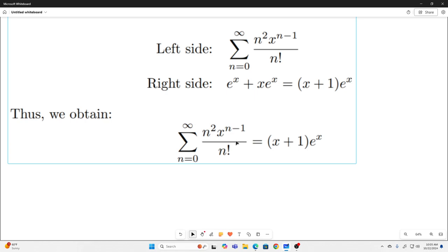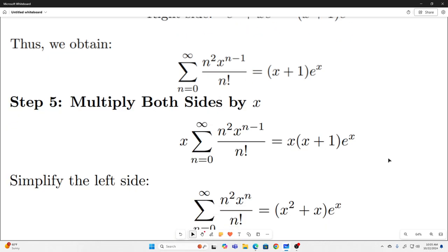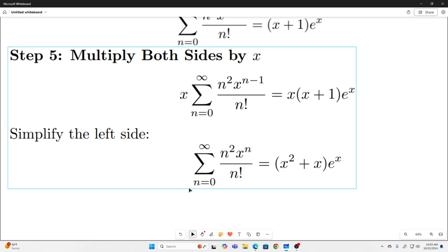Well, we've extracted an n squared out of it, so it would make sense after we simplify this and multiply both sides by x again to differentiate again. So first we multiply both sides by x, and then we bring the x inside the sum again, and this is what we end up with.